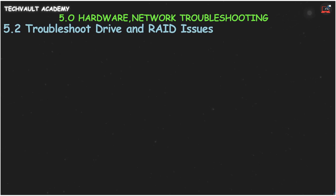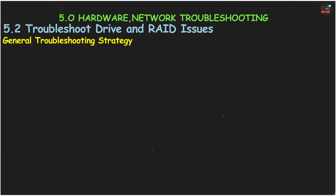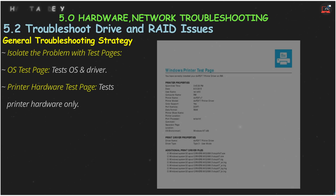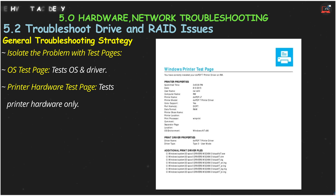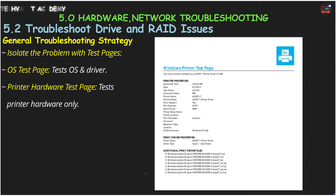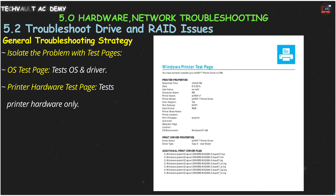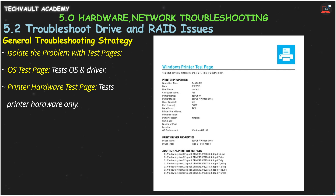Your first step in troubleshooting is to isolate the problem. A great way to do this is with a test page. A test page from your Windows Settings, the OS, and Driver tests the software side. A test page printed directly from the printer's own controls tests only the hardware. Comparing the two is a powerful clue.